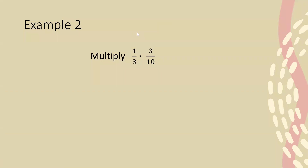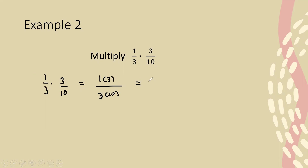In this example we're asked to multiply 1/3 times 3/10. I'm going to rewrite it down here. Now I multiply my top numbers: 1 times 3, and put that over my bottom numbers: 3 times 10. So the top gives me 3 and the bottom gives me 30. You can simplify this further, but I'm going to leave it as 3/30.